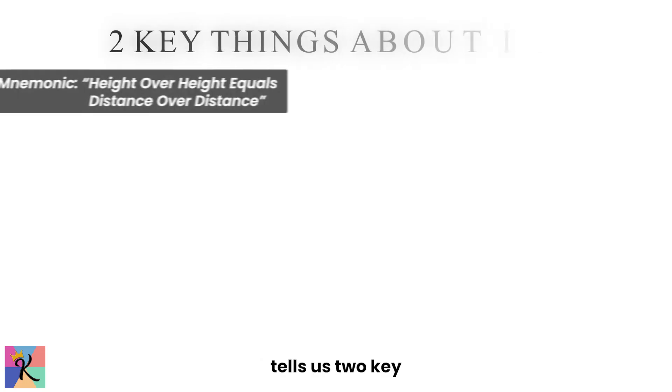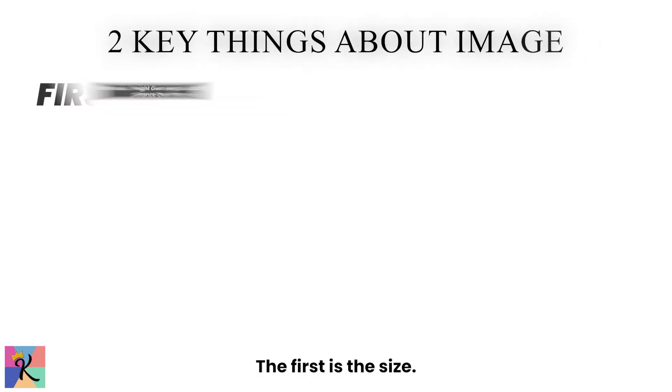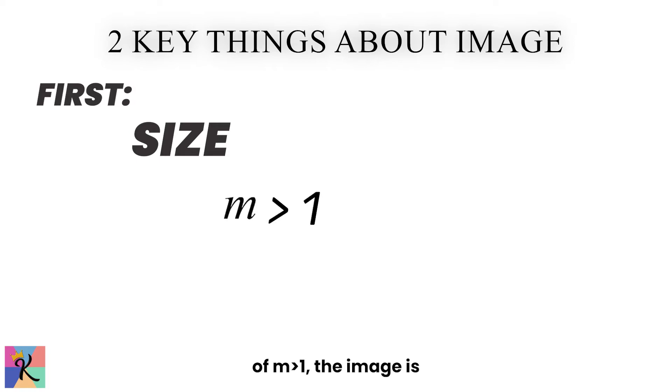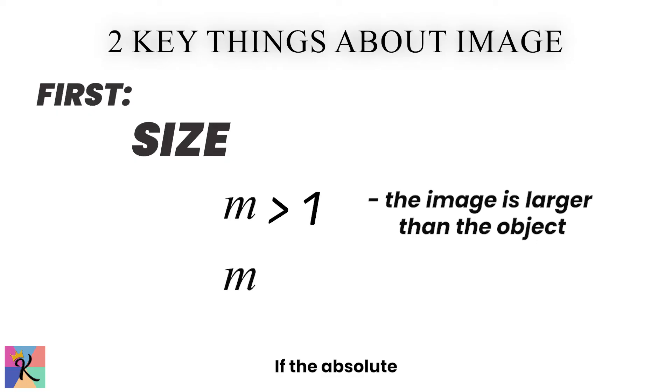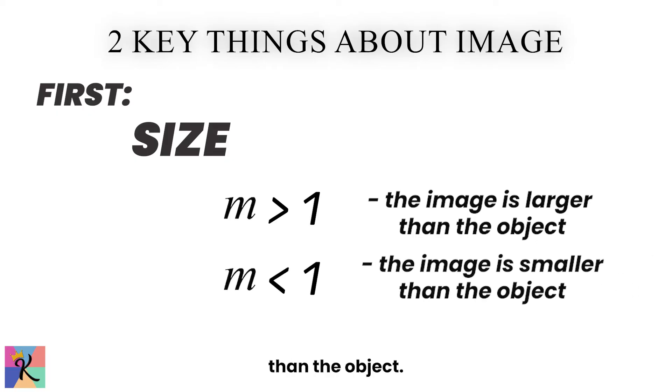Magnification tells us two key things about the image. The first is the size. If the absolute value of M is greater than 1, the image is larger than the object. If the absolute value of M is less than 1, the image is smaller than the object.